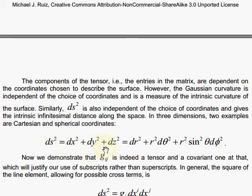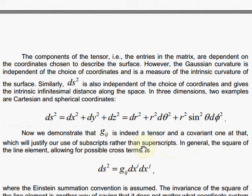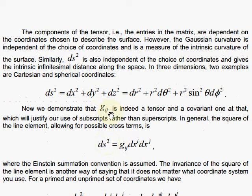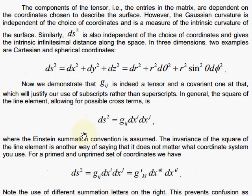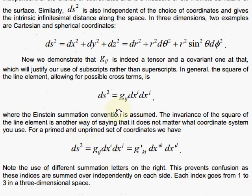Look at ds squared here in Cartesian coordinates. It would be dx squared plus dy squared plus dz squared. This would be spherical coordinates. So we have Cartesian and spherical, and we want to demonstrate here at this point that the gijs, those components do consist of components of a tensor, and the tensor is going to be a covariant tensor.